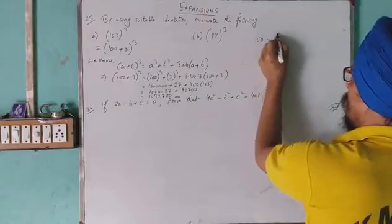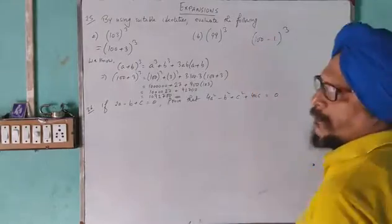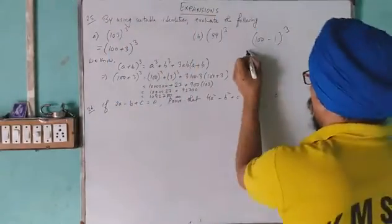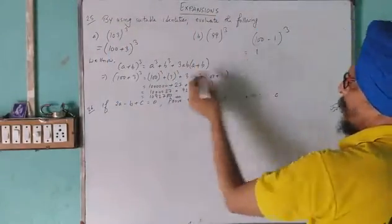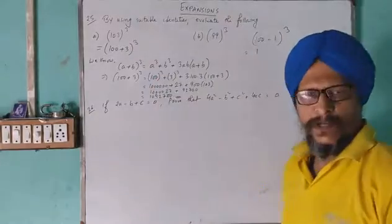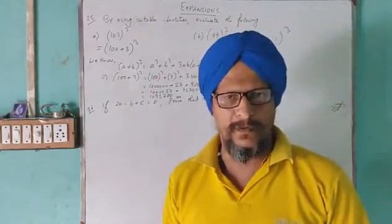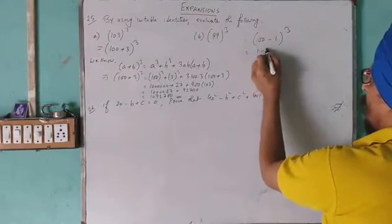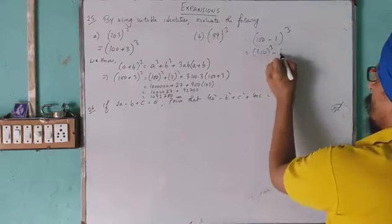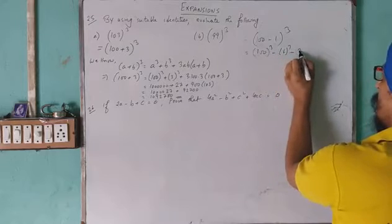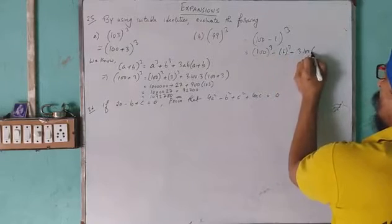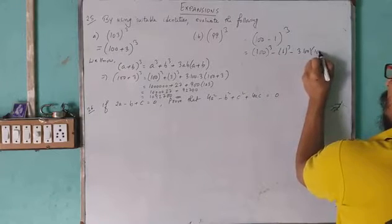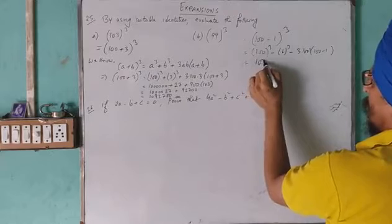A plus b whole cube. So if we have a minus b whole cube, then the formula will be a cube minus b cube minus 3ab, a minus b.